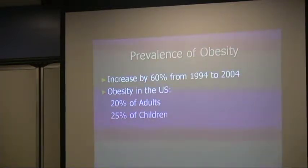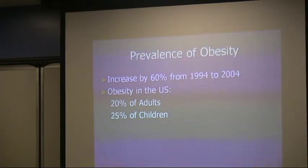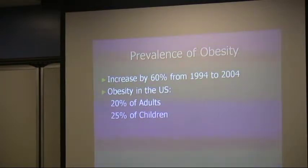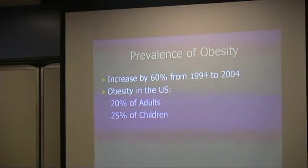The prevalence of obesity is also increasing — by 60 percent from 1994 to 2004. It is estimated that obesity in the United States applies to 20 percent of adults and 20 percent of children. There is definitely a parallel between type 2 diabetes and obesity.